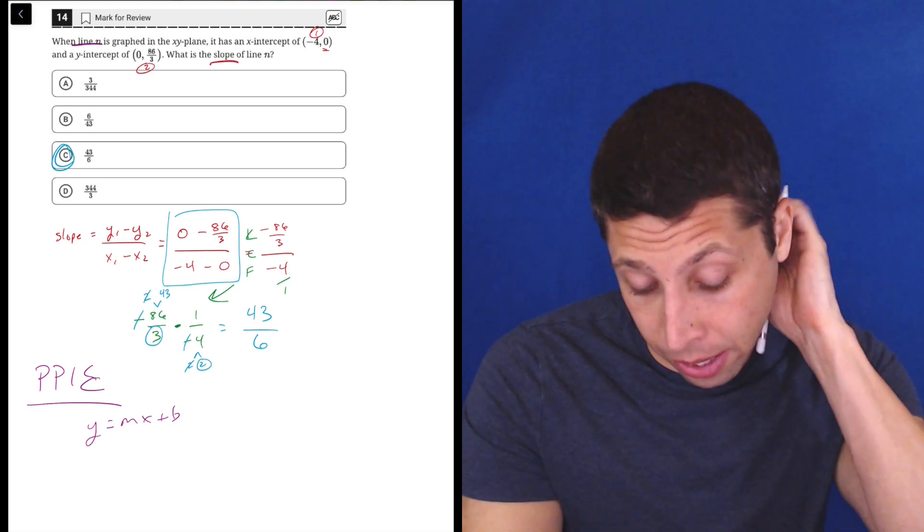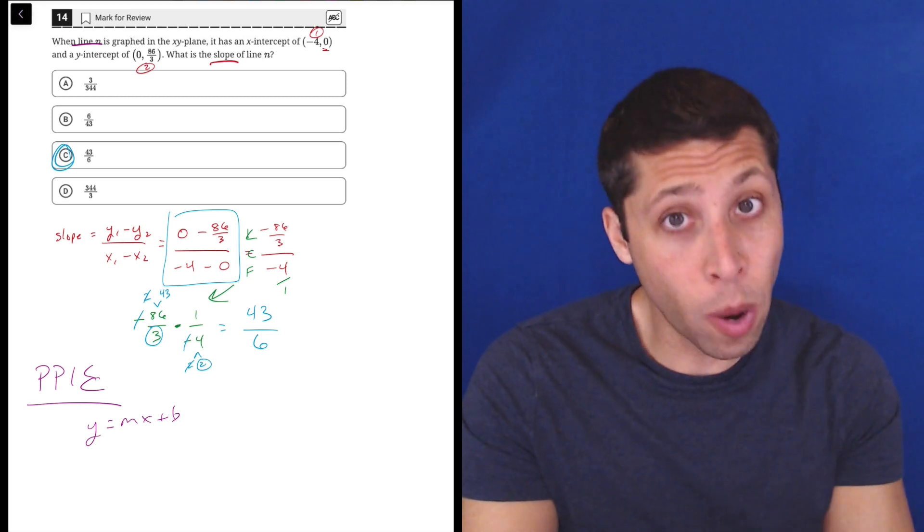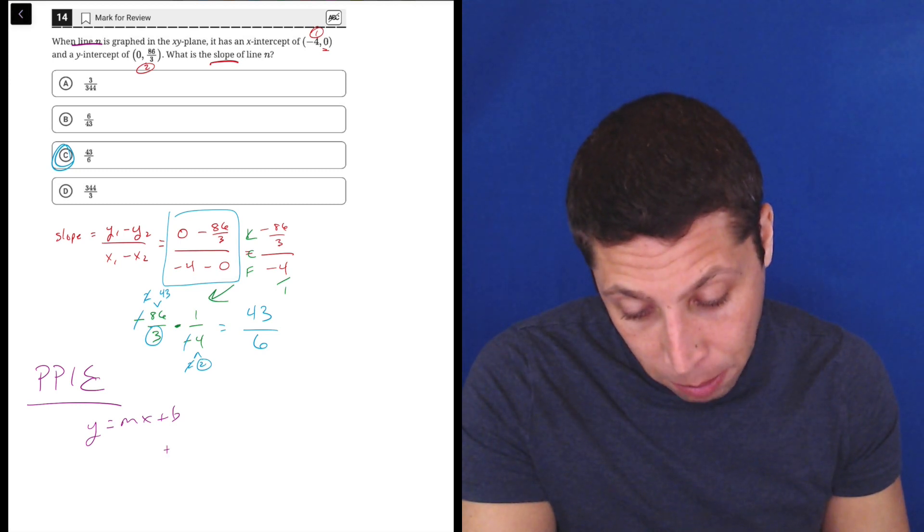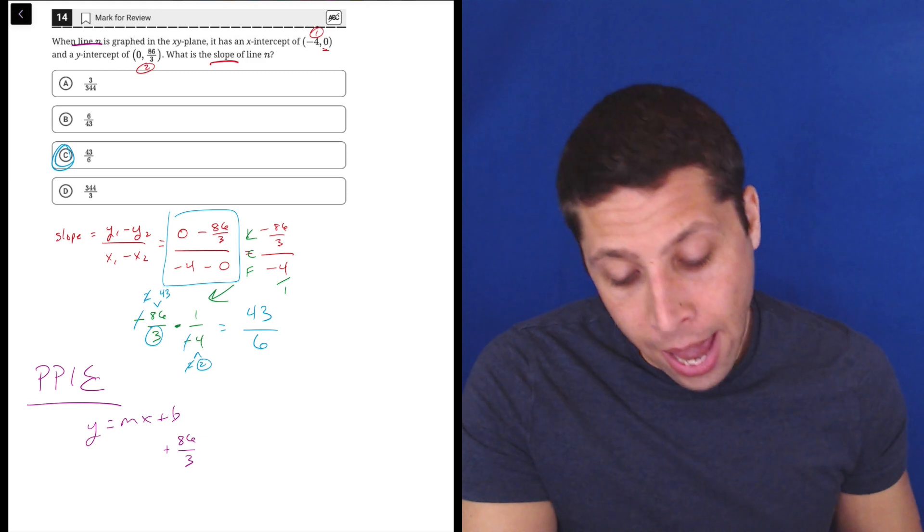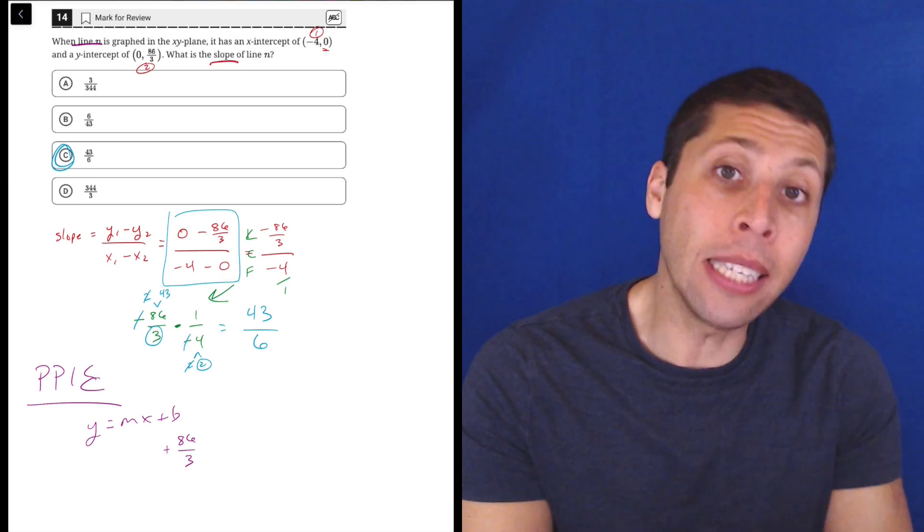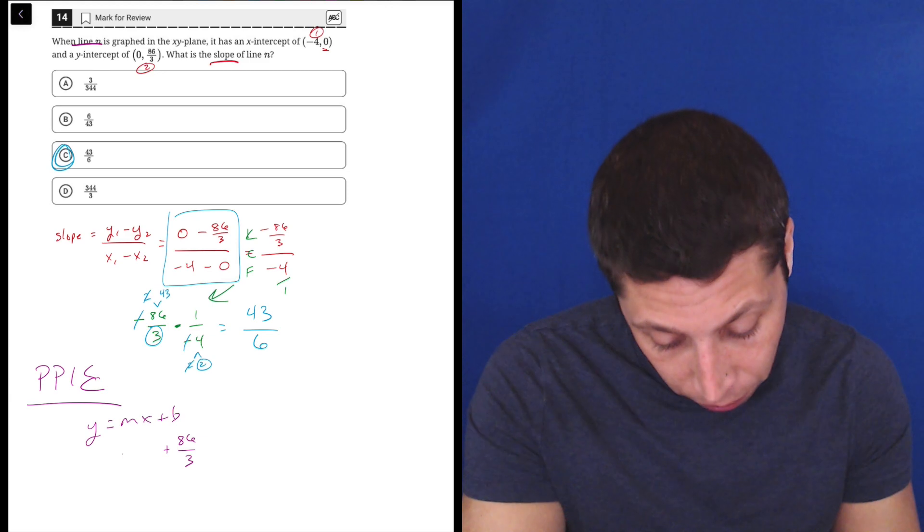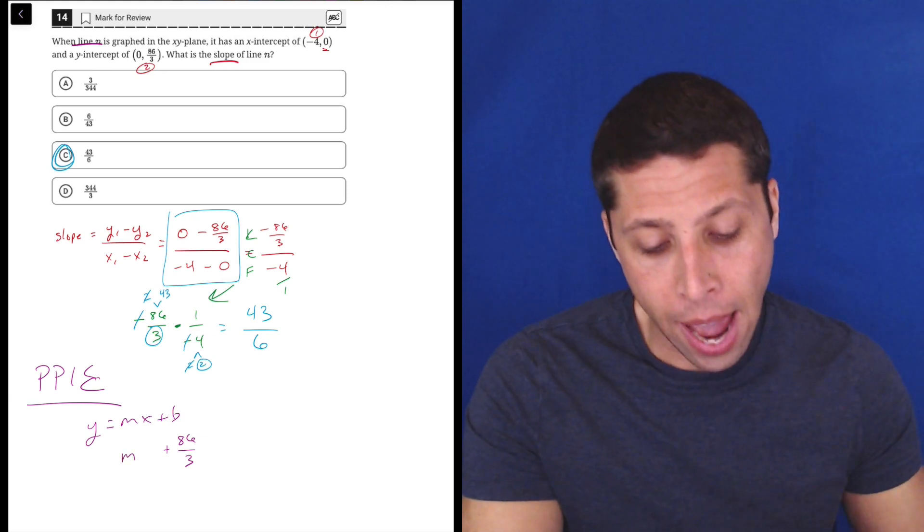But we can also use the standard equation, y equals mx plus b, for a line, because they tell us it's a line, right? The line n. So now, how do we plug things in? Well, we can plug in the y-intercept, because that's what the b is. So that would be plus 86 thirds as the b.